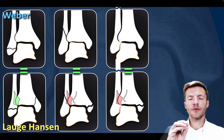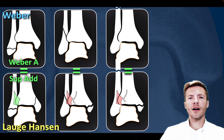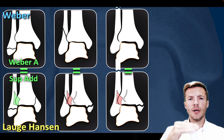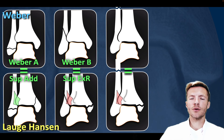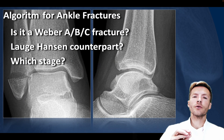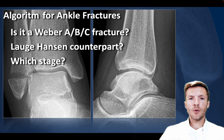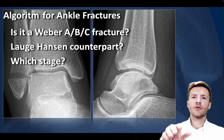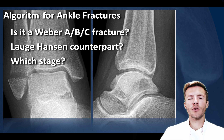Luckily, the Weber and Lauge-Hansen classifications have striking similarities when looking at the fibular fracture. A Weber A fracture looks almost the same as a supination adduction fracture — below the level of the syndesmosis in a transverse direction. A Weber B fracture corresponds to a supination axial rotation fracture, and a Weber C fracture — above the level of the syndesmosis, sometimes outside the field of view — corresponds to a pronation axial rotation fracture. The algorithm should be used as follows: first identify the Weber fracture type, then determine the Lauge-Hansen subtype, and finally confirm which stage or grade of the Lauge-Hansen fracture you are dealing with.